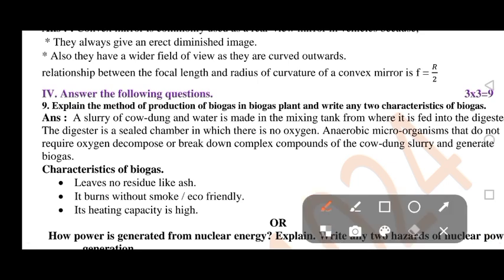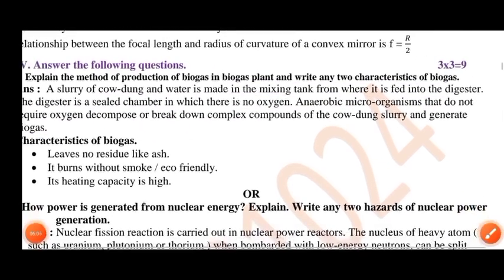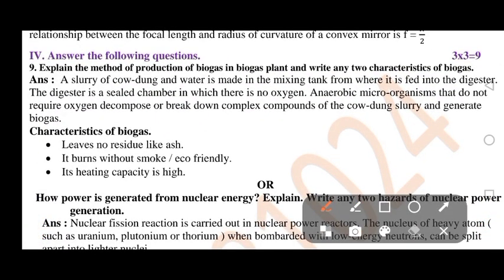Explain the method of production of biogas in a biogas plant and write any two characteristics of biogas. The method of production: slurry of cow dung and water is made in the mixing tank, from where it is fed into the digester. The digester is a sealed chamber in which there is no oxygen. Anaerobic microorganisms that do not require oxygen decompose or break down complex compounds of the cow dung slurry and generate biogas. Characteristics of biogas: it leaves no residue like ash, it burns without smoke, it is eco-friendly, and its heating capacity is high.